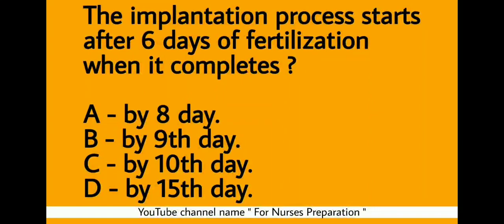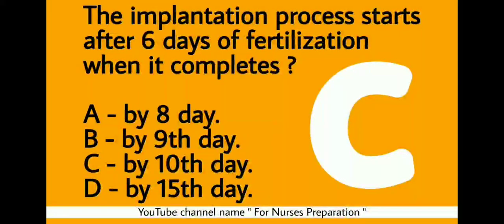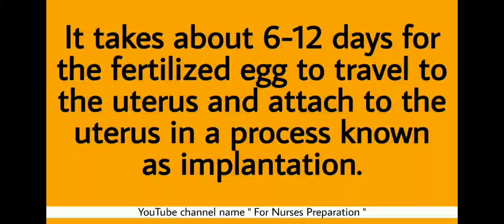The implantation process starts after 6 days of fertilization. When does it complete? Option A - By 8th day. Option B - By 9th day. Option C - By 10th day. Option D - By 15th day. The right answer is Option C, by the 10th day. It takes about 6 to 12 days for the fertilized egg to travel to the uterus and attach to it — this process is known as implantation.